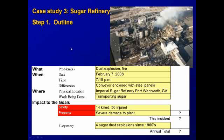Our example for a dust explosion is the explosion of a sugar refinery in Georgia in 2008. There was a dust explosion and a subsequent fire in the evening of February 7th. The work being done was transporting sugar on a conveyor enclosed with steel panels. There were 14 people killed and 36 injured, and there was severe damage to the plant. There had been four sugar dust explosions since the 1960s when this explosion occurred.